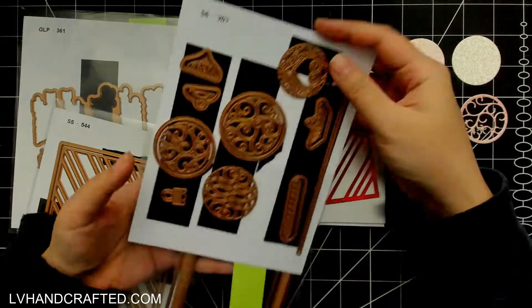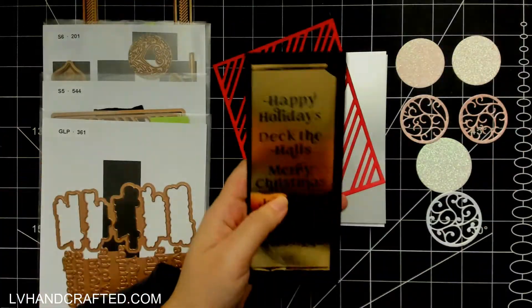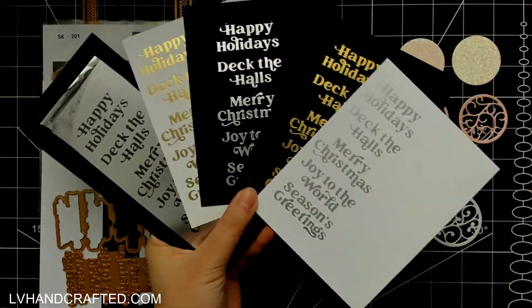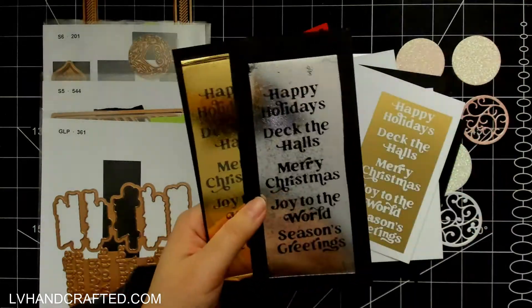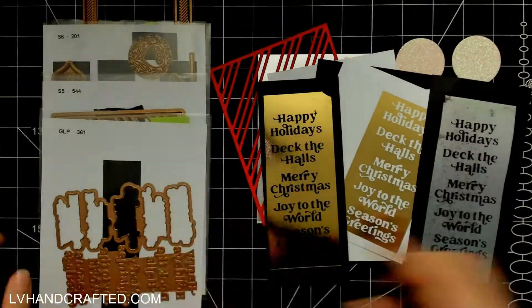You have a lot of different options for changing their shapes a little bit by adding that little bit at the bottom and then from the Simon Hurley collection I've got the glimmer plate set which is awesome.